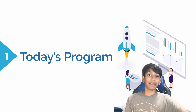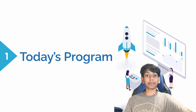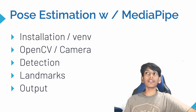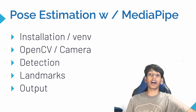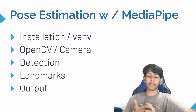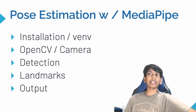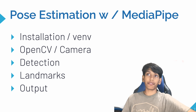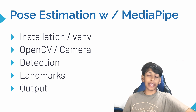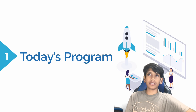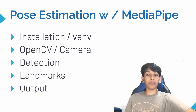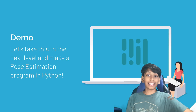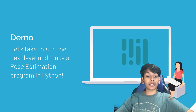Now that you know what MediaPipe is and what Pose Estimation is, let's check out today's program. First of all, we're just going to have the installation of MediaPipe and OpenCV, which we're going to be using for drawing. Then we'll initialize the camera to get a video feed. Then we'll do the detection and find all of the landmarks, or key points. Then we'll do the output, which is drawing all the key points and pointing them out. Let's get straight into the interactive demo.